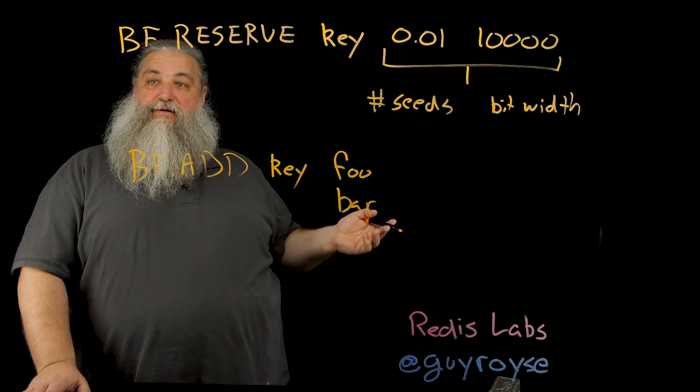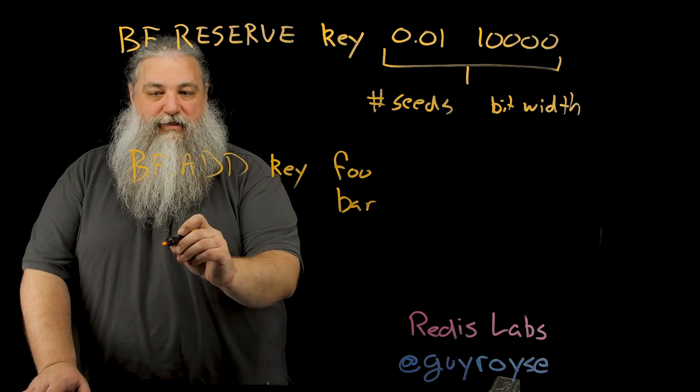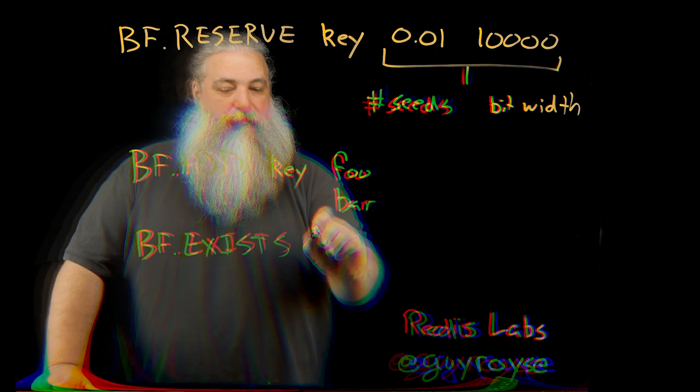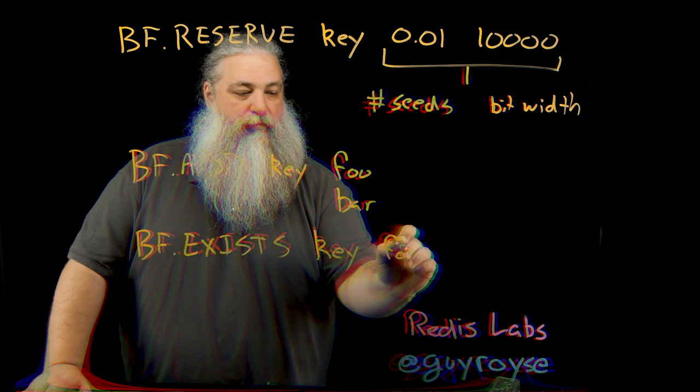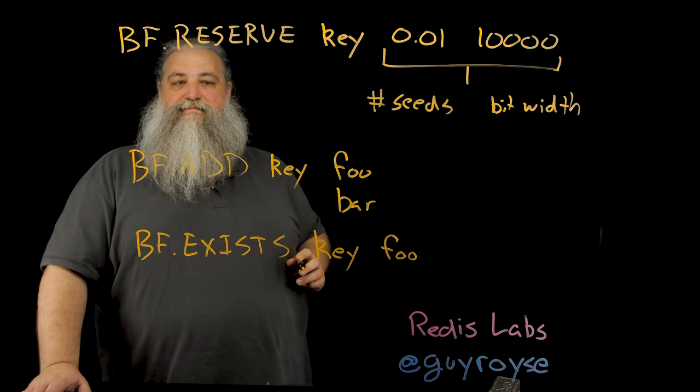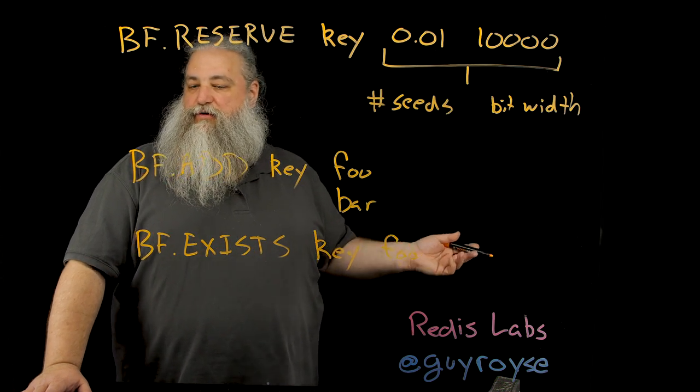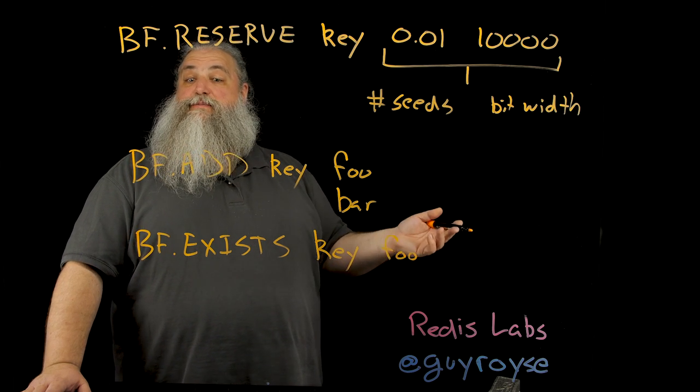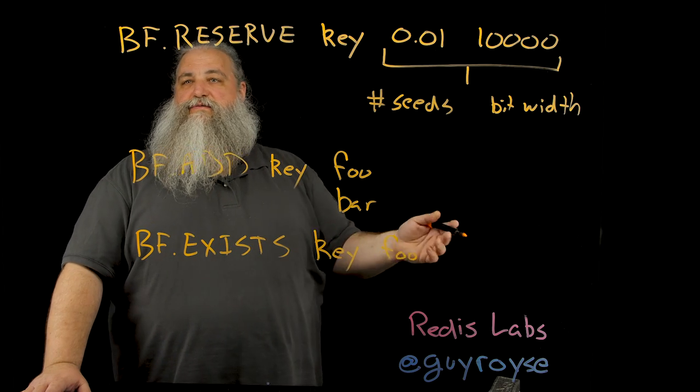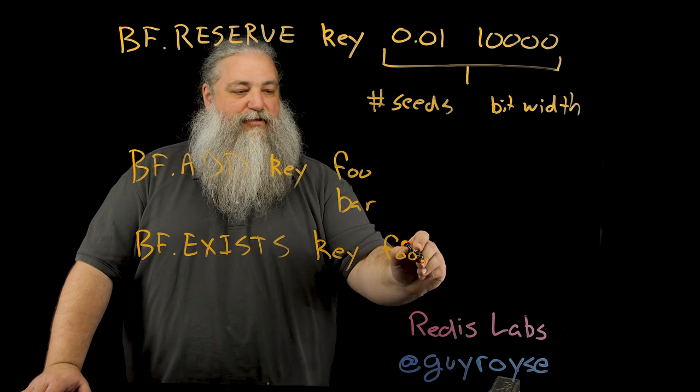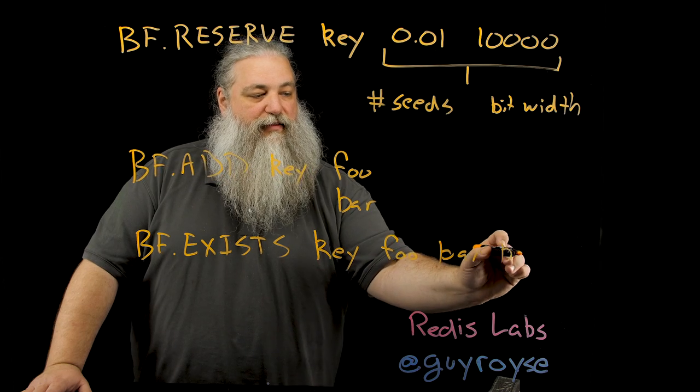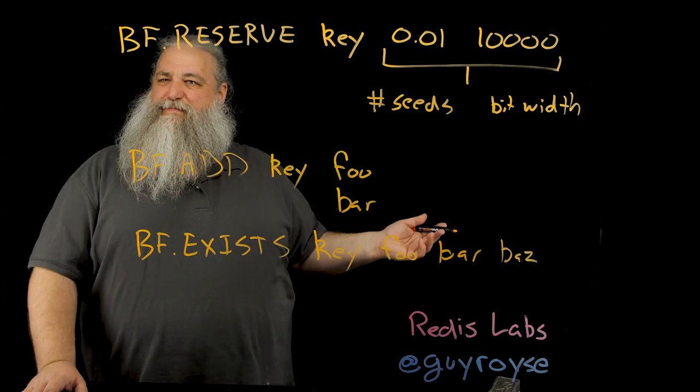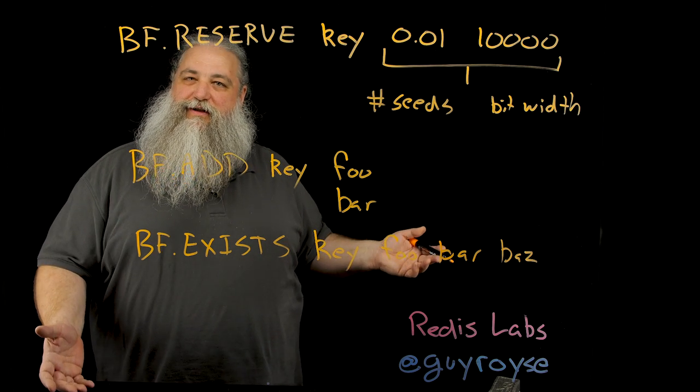Then once you've got some things in your bloom filter to use it, you call BF.EXISTS. So BF.EXISTS, you pass it a key and a value. You're saying, is foo in the bloom filter? And it will say yes or no with a one or a zero coming back to you. So the corresponding multiple version of this is MEXISTS. And it works exactly the same, except you just say foo, bar, and baz like this. And yeah, that's pretty much all that you need to do to use a bloom filter in Redis.